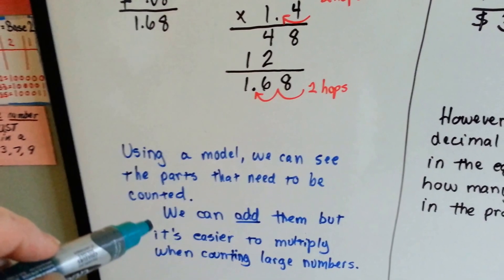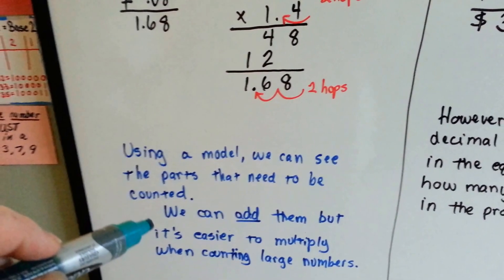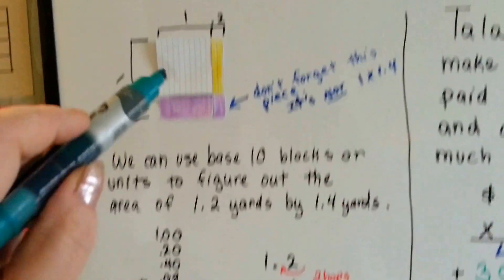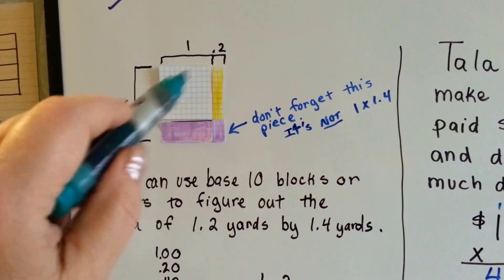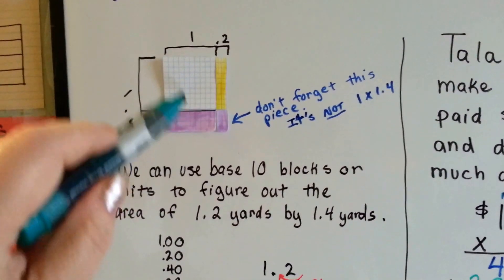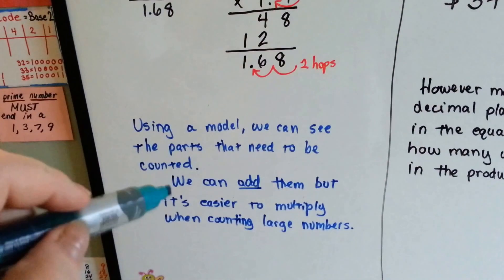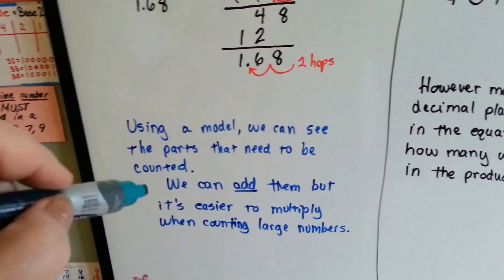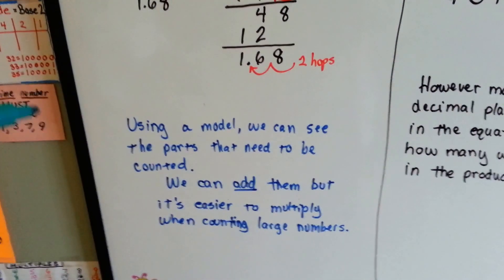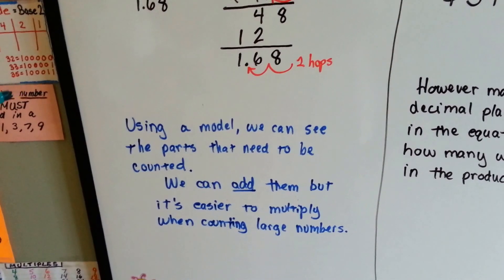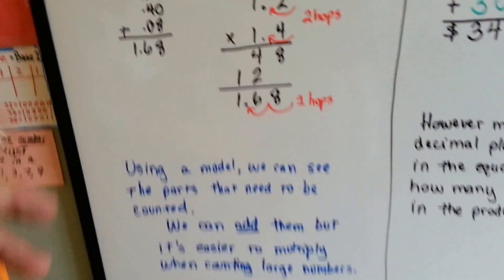So using a model, we can see the parts that need to be counted. We can see that there are 4 pieces here. We can add them, but it's easier to multiply when counting large numbers.